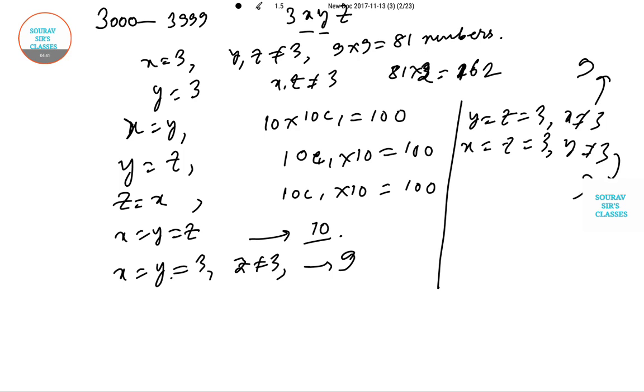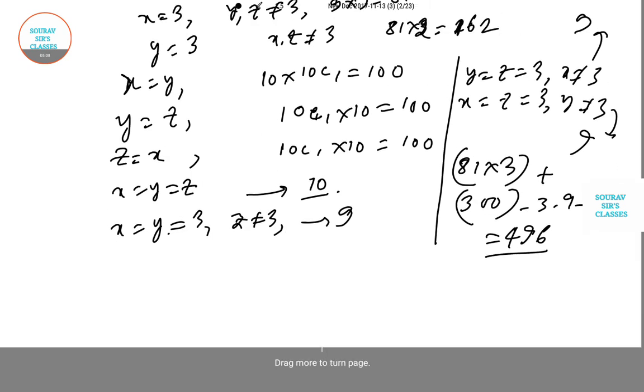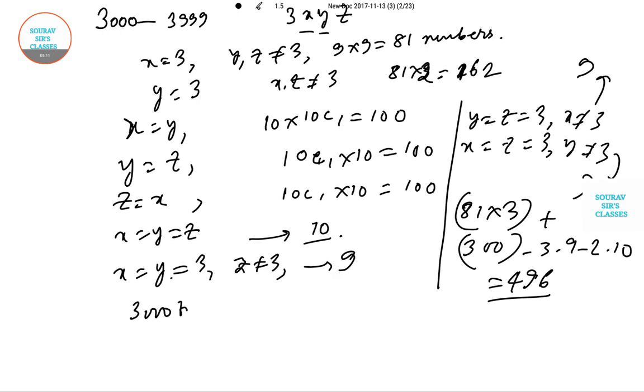So the number of required numbers from 3000 to 3999 is 81 times 3 plus 100 times 3 minus 3 times 9 minus 2 times 10. This is giving us 496.